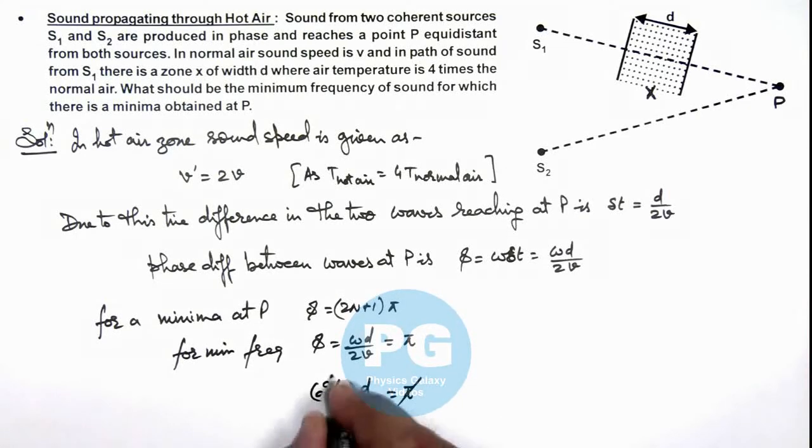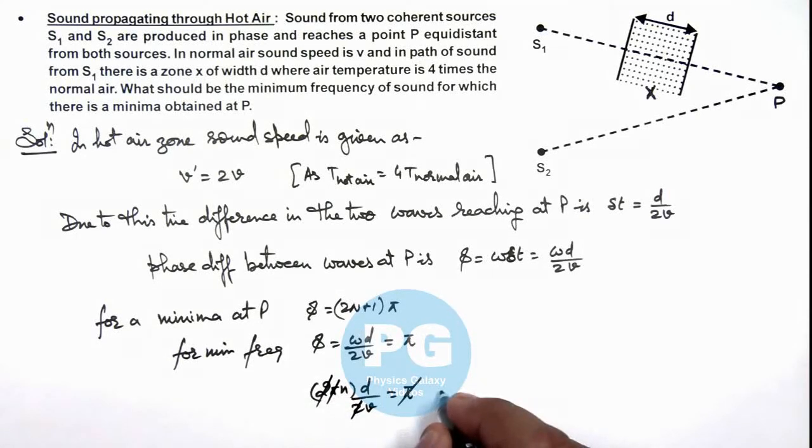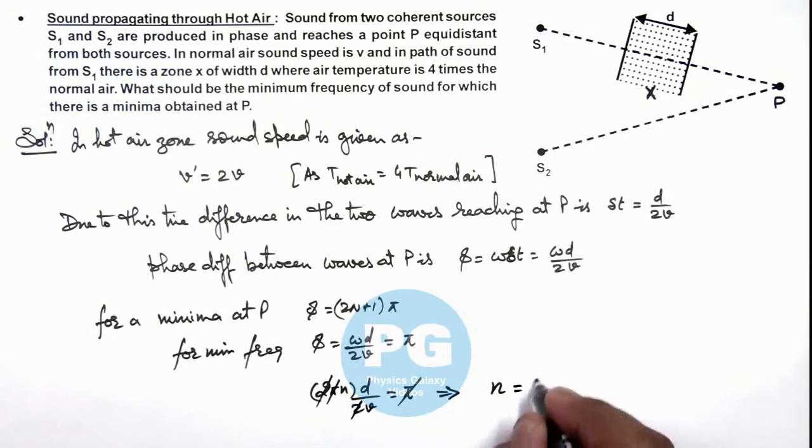Here π gets cancelled out, 2 gets cancelled out, and this gives us the value of frequency as v by d.